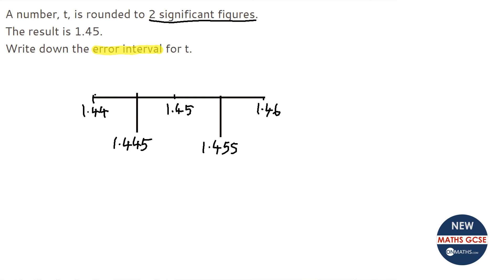Now we also call this number our lower bound and we call this number our upper bound. The way we write this is 1.445 is lower than t is lower than 1.455.